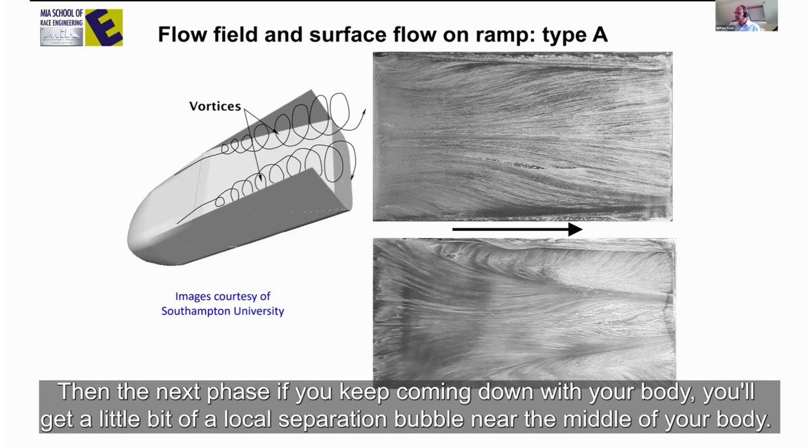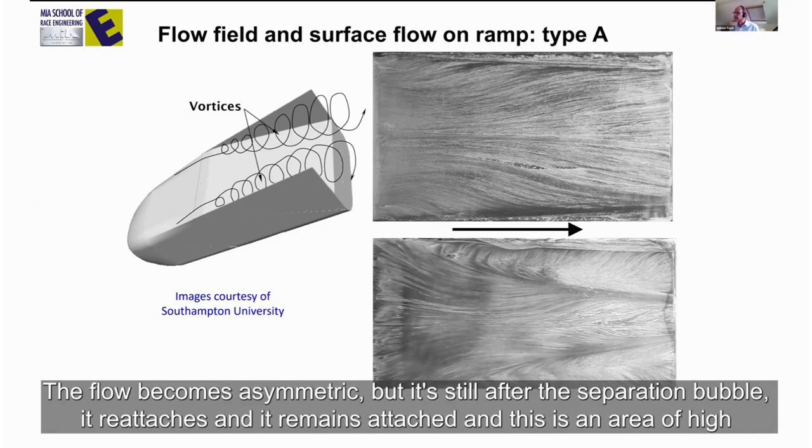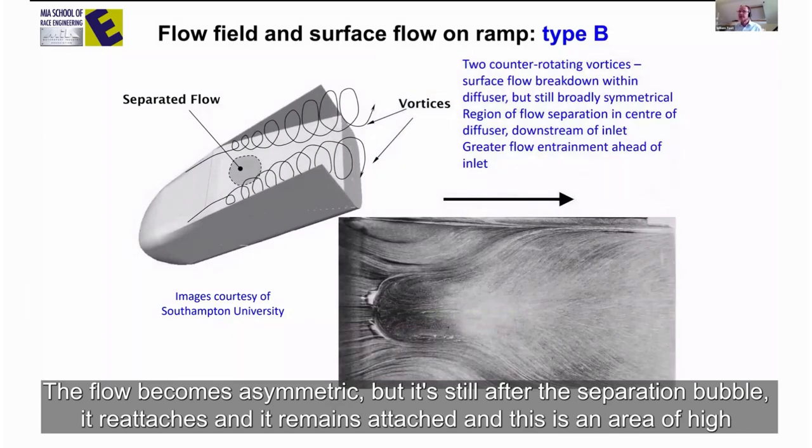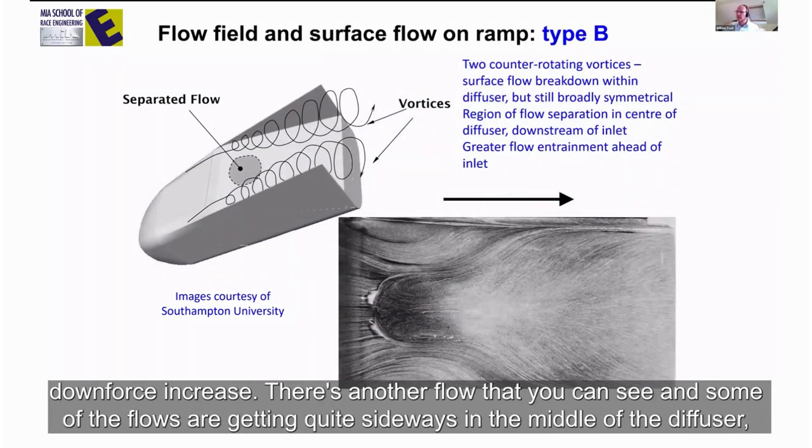Then the next phase, if you keep coming down with your body, you get a little bit of a local separation bubble near the middle of your body. The flow becomes asymmetric, but it's still, after the separation bubble, it reattaches and it remains attached. And this is an area of high downforce increase.